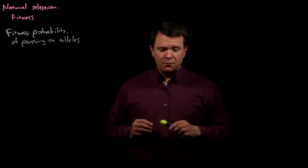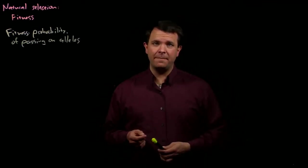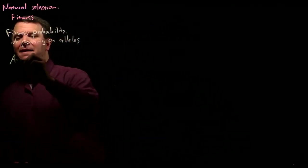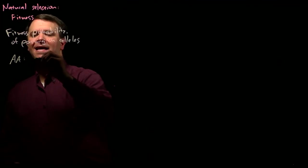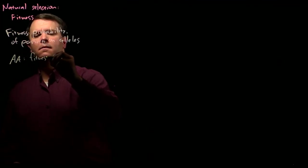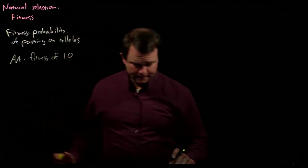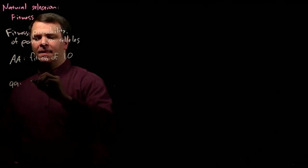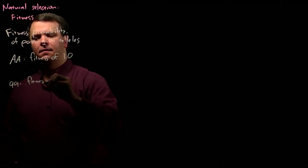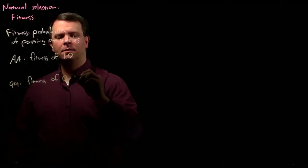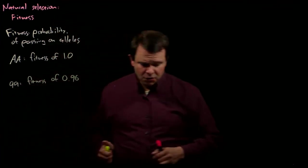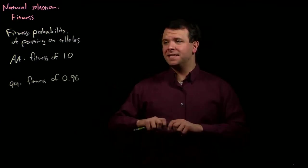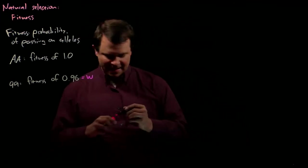We usually say that the most fit genotype has a fitness of one. For example, let's say that a genotype AA has a fitness of 1.0 and the genotype little a little a has a fitness of 0.96. We usually represent the fitness of a particular genotype as W.